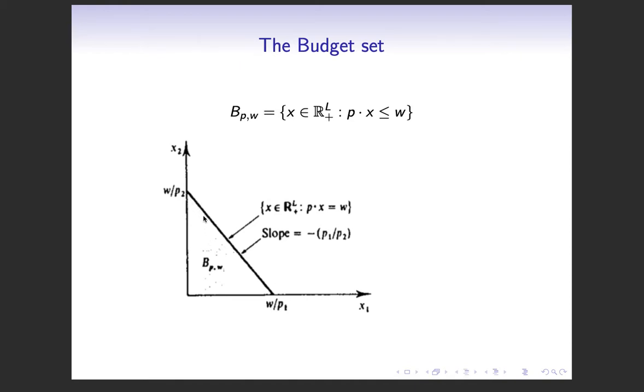Hopefully we can see that this looks like it's compact. It seems like it's bounded by this line, every X1 is bounded by W over P1 and every X2 is bounded by W over P2. So hopefully that seems like it's bounded. Is it also closed? Well, there's no holes that we see anywhere, so it seems like it would contain its limit points. So at least in two dimensions it looks like it's compact, but we need to know that when L is greater than 2.